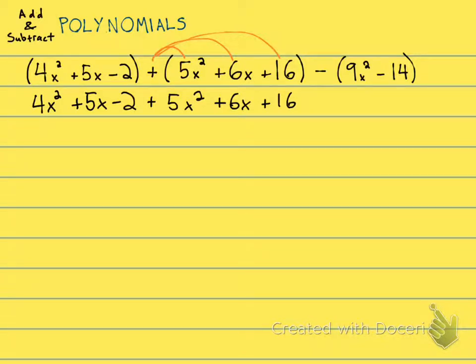And now this last polynomial, we're subtracting. So a lot of students like to think of this as being like a negative 1 that you're distributing. You're subtracting the 9x², and that is going to give you a minus 9x².